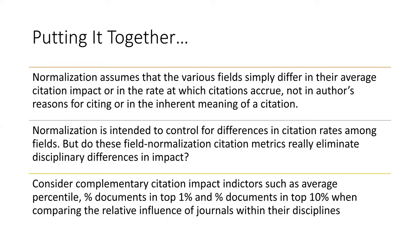The rationale for normalization is not always clear and transparent. Normalization assumes that various fields simply differ in their average citation impact or in the rate at which citations accrue — in other words, we assume some disciplines produce big apples and others produce small apples. Some literature has criticized that standard field-normalized citation metrics do not actually eliminate disciplinary differences in impact.